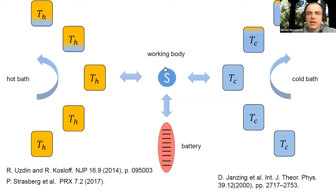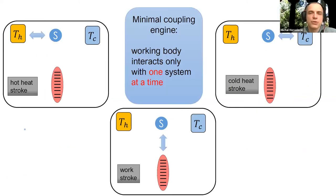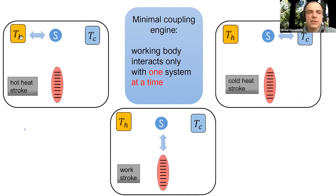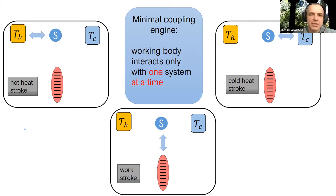To understand what is really going on in these micro-engines, it is good to introduce even more restricted engines where the working body can interact with each of the three systems—hot bath, cold bath, and battery—only one at a time. We call these minimal coupling engines, introduced in this paper, and we analyze their properties.